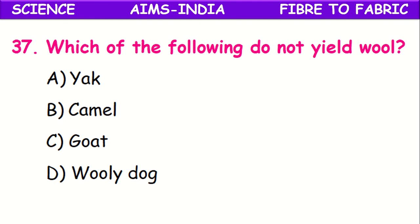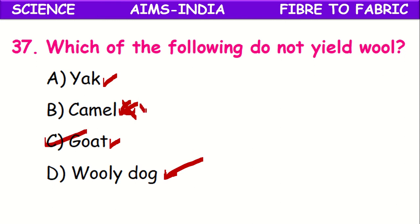Which of the following animals do not yield wool? Generally wool is obtained from certain animals — yak, camel, goat or sheep, and woolly dog. But out of the given options, goat does not yield wool. Sheep gives the hair used for making wool fiber, but goat does not.